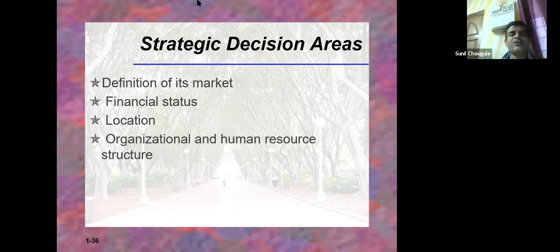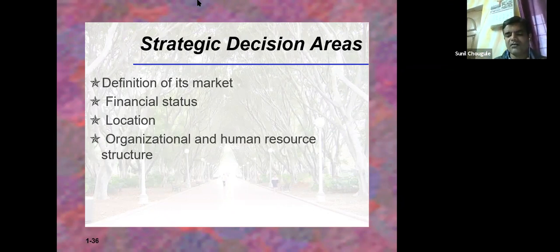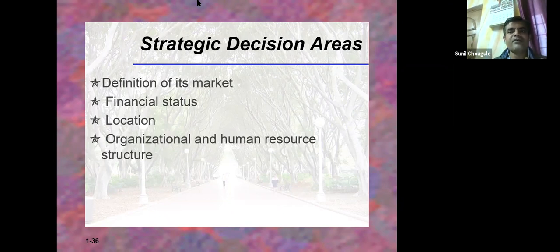Organizational and human resource structure: a branch manager reports to middle and higher authorities or partners of the organized retail store. Within one branch, employees are allocated floor-wise: floor assistants, cashiers, housekeeping staff, security, and a person who looks after repair and maintenance of equipment inside that retail store. This is the organizational and human resource structure.